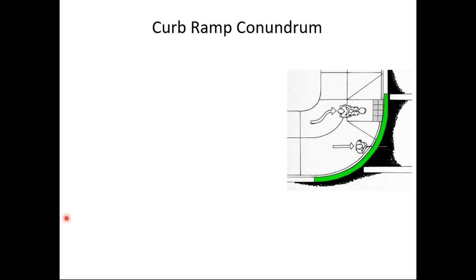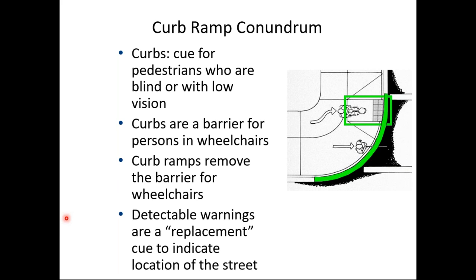Now for the curb ramp conundrum. Curbs provide valuable navigation cues to visually impaired and blind pedestrians, but are a barrier to wheelchair users. At a corner we install curb ramps to remove the barrier — but where the curb is missing, someone who is blind using a cane could walk into the street without realizing it. That is why we install detectable warning surfaces: they serve as a replacement cue to let the visually impaired know they are about to enter the street.